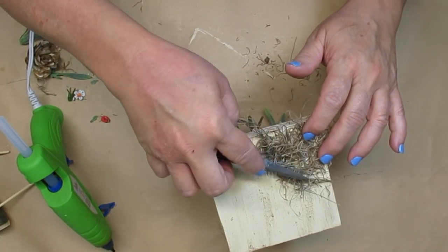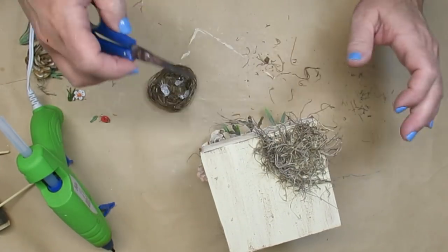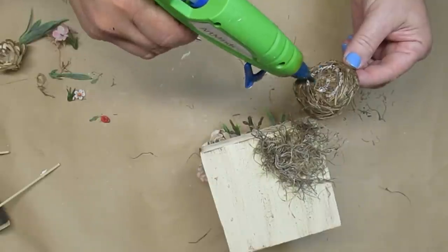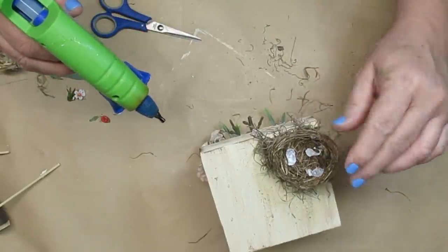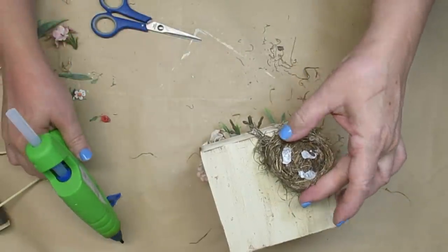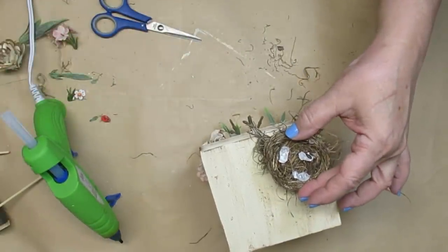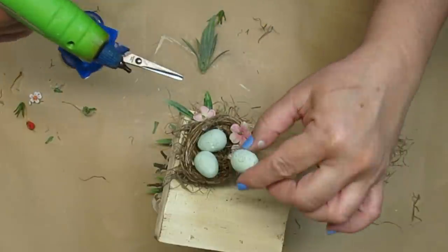For the final touch of this birdhouse, I'm adding some Spanish moss to the top corner. I'm going to hot glue the little nest back into it, add a few little greenery sprigs and some of those little pink flowers, and then put the eggs back in.